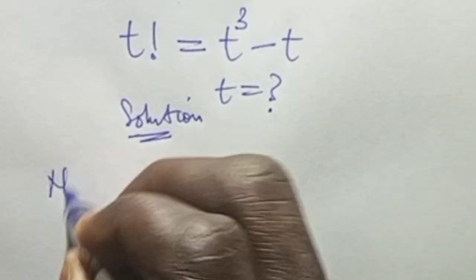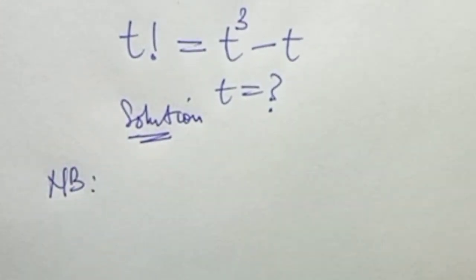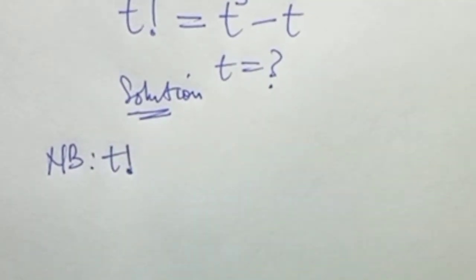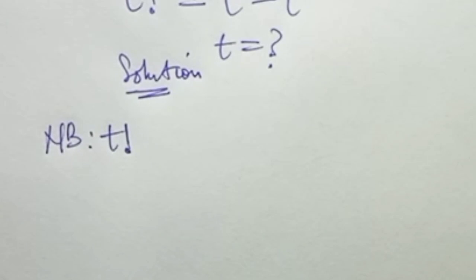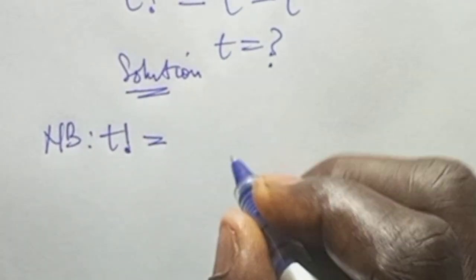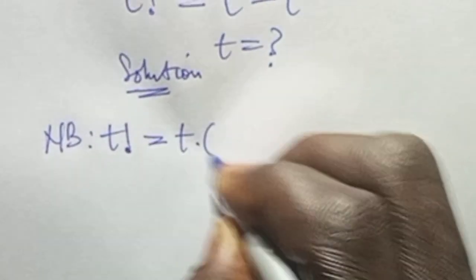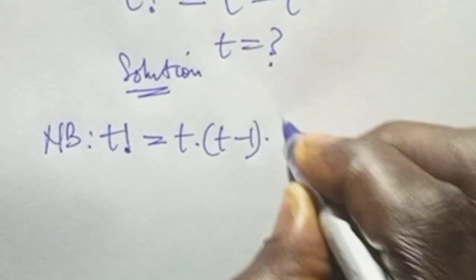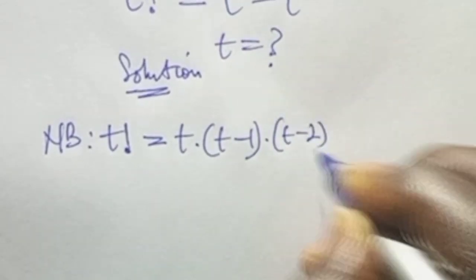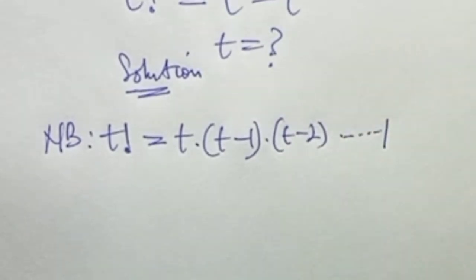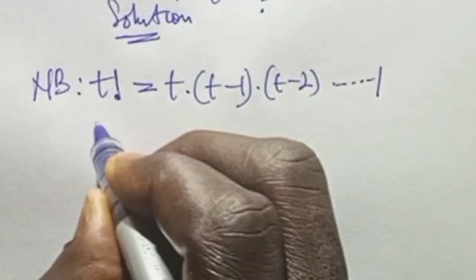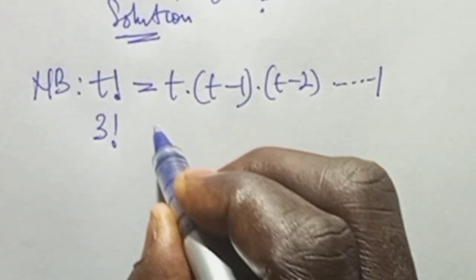First, note that the concept of factorial: t factorial is represented as t multiplied by t minus 1, multiplied by t minus 2, continuing down until we finally arrive at 1.